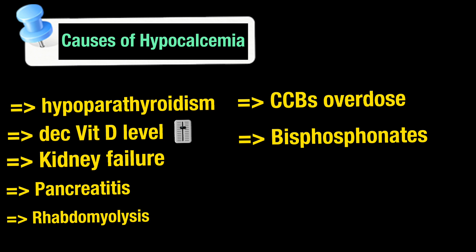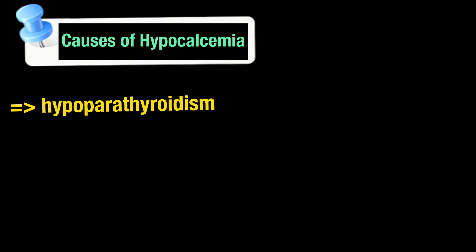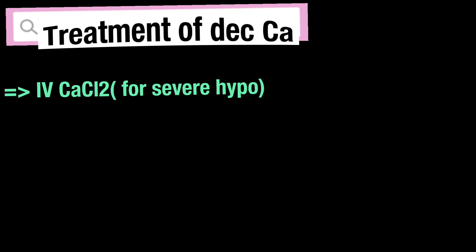The third cause is kidney failure. The kidney performs two important functions for calcium regulation: first, it converts vitamin D into its active form, and second, it absorbs calcium through the kidney tubules. The fourth cause of hypocalcemia is pancreatitis, while the fifth cause is rhabdomyolysis.